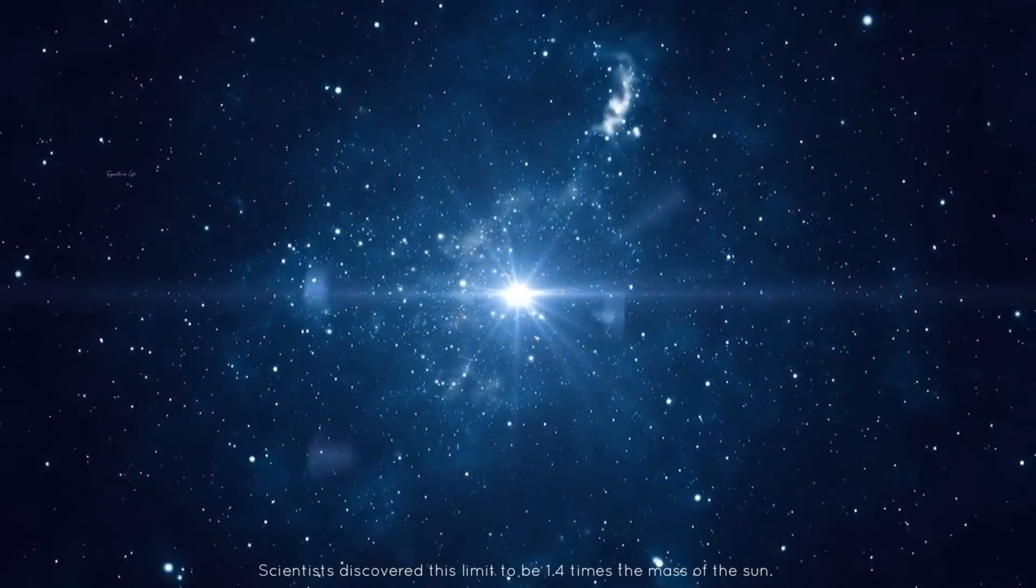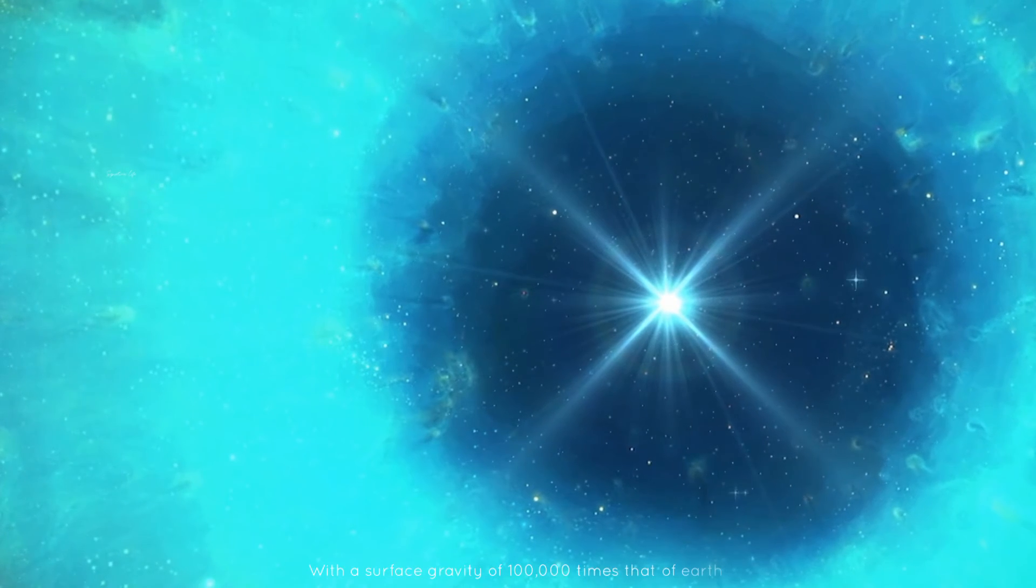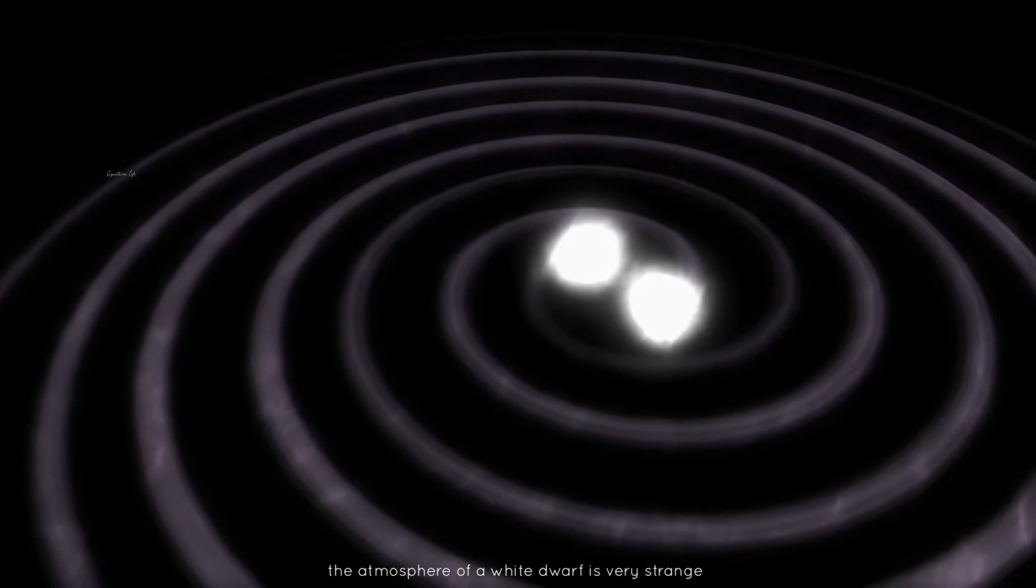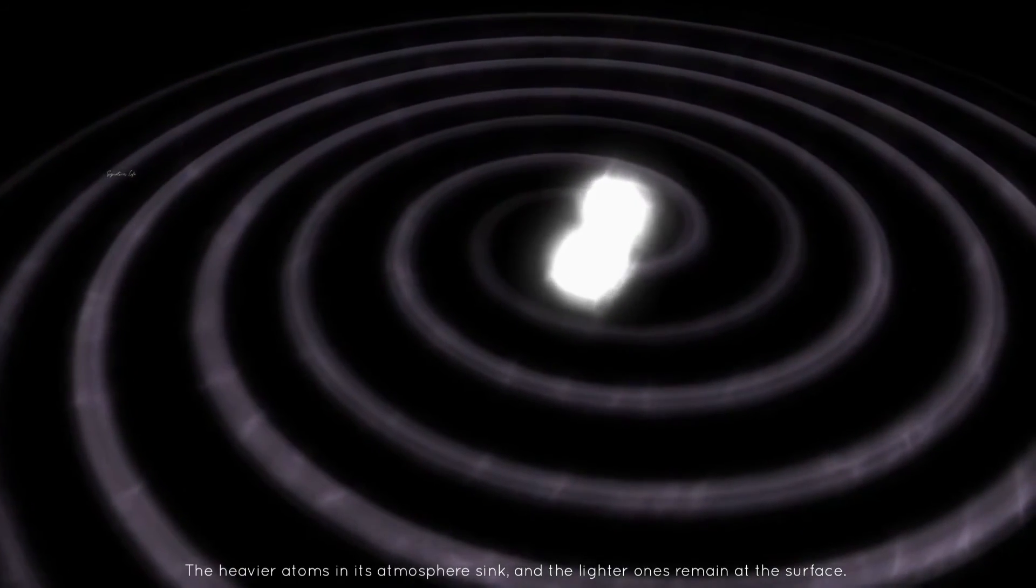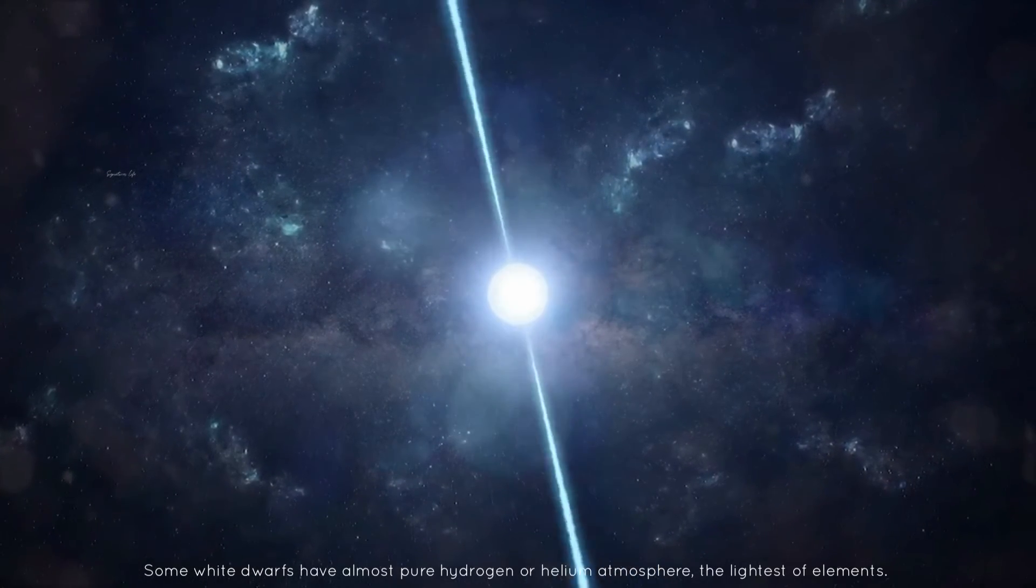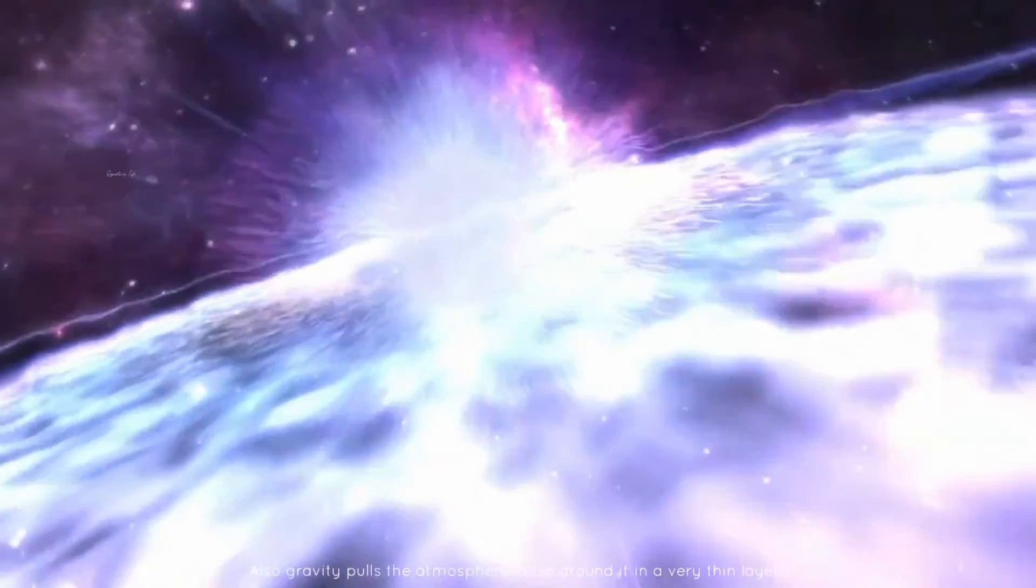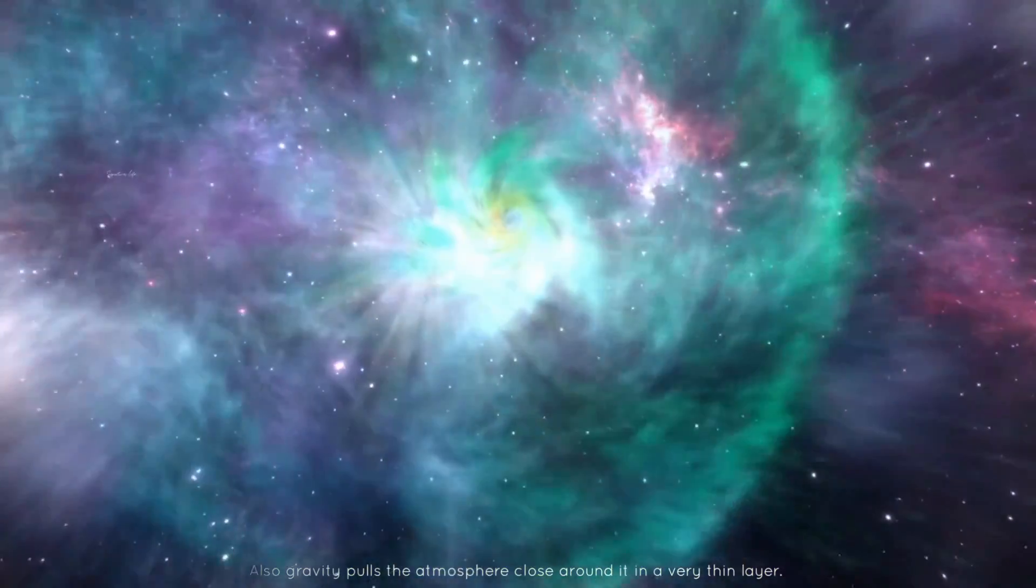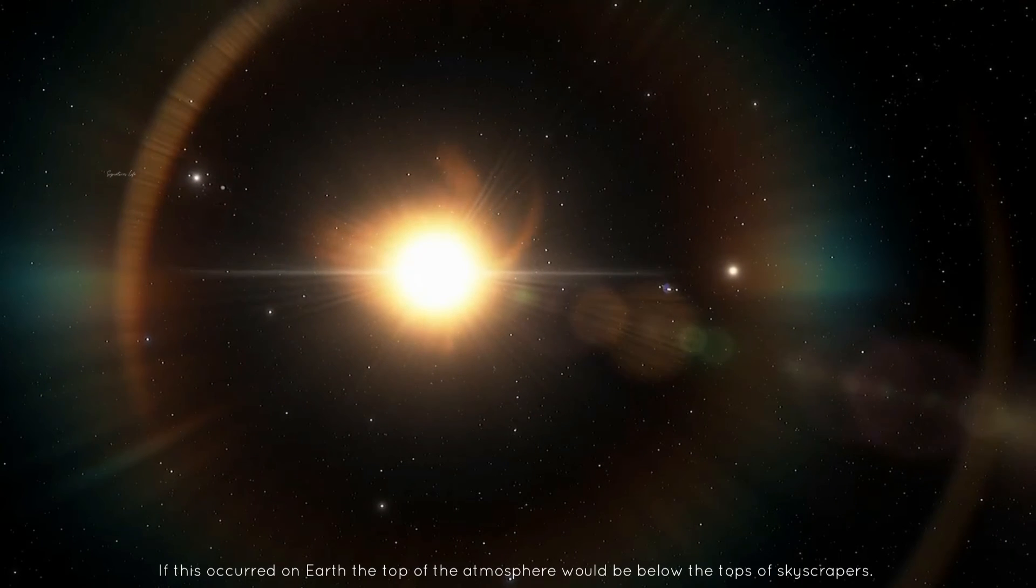Scientists discovered this limit to be 1.4 times the mass of the sun. With a surface gravity of 100,000 times that of Earth, the atmosphere of a white dwarf is very strange. The heavier atoms in its atmosphere sink and the lighter ones remain at the surface. Some white dwarfs have almost pure hydrogen or helium atmospheres, the lightest of elements. Also, gravity pulls the atmosphere close around it in a very thin layer. If this occurred on Earth, the top of the atmosphere would be below the tops of skyscrapers.